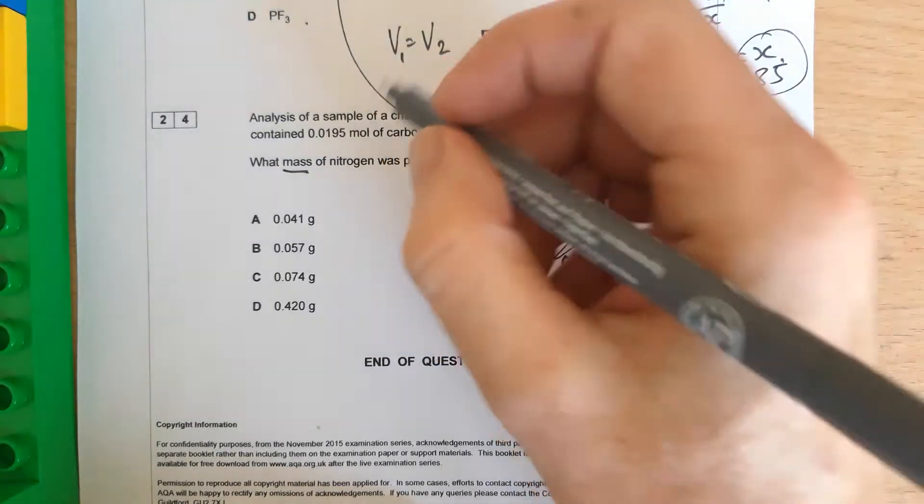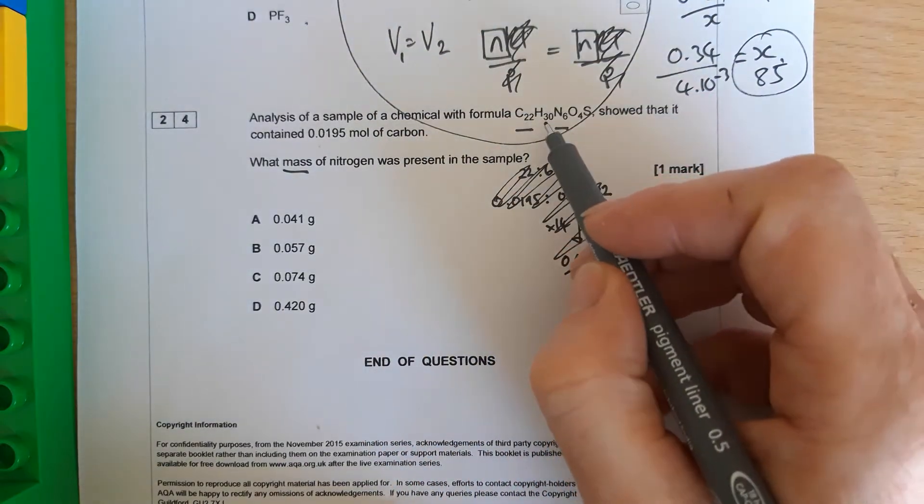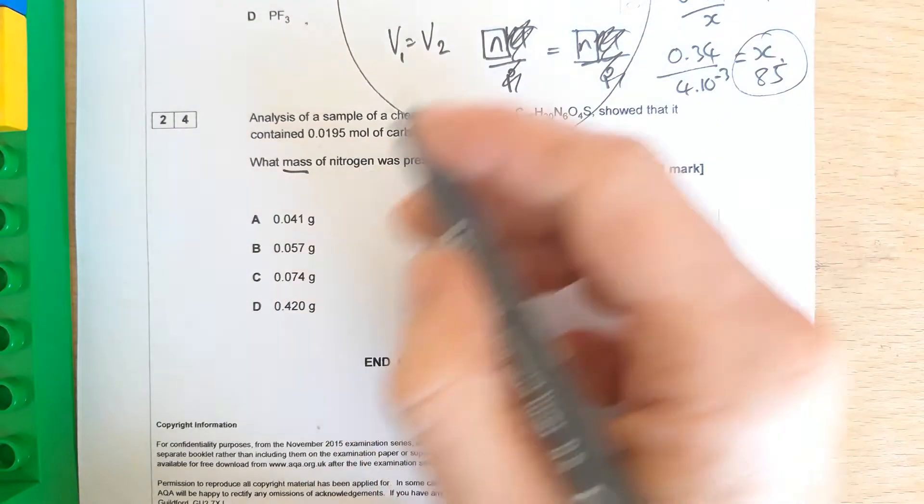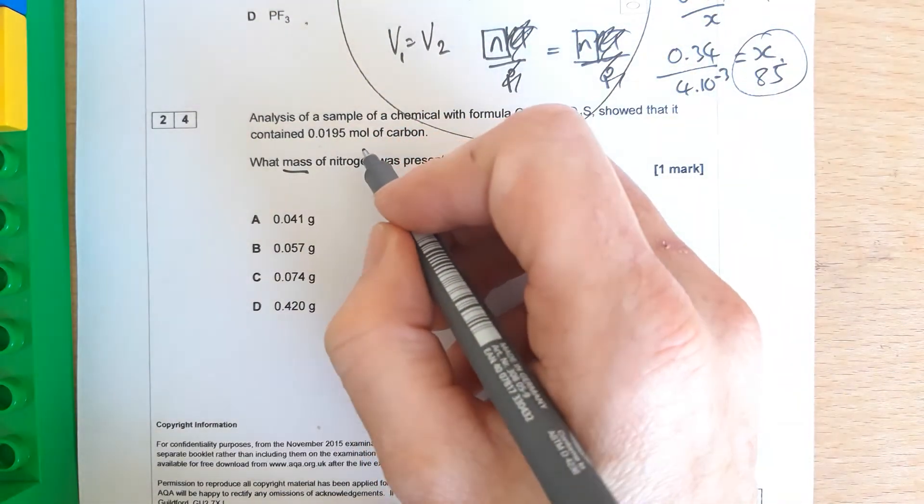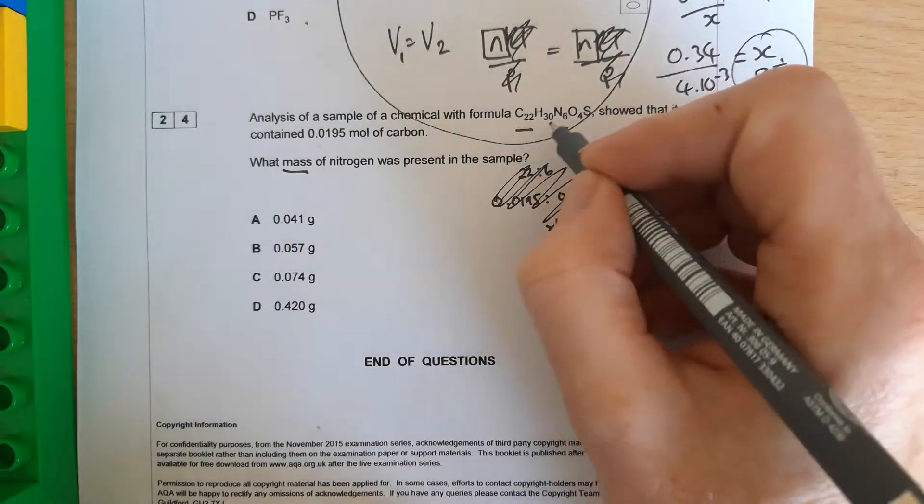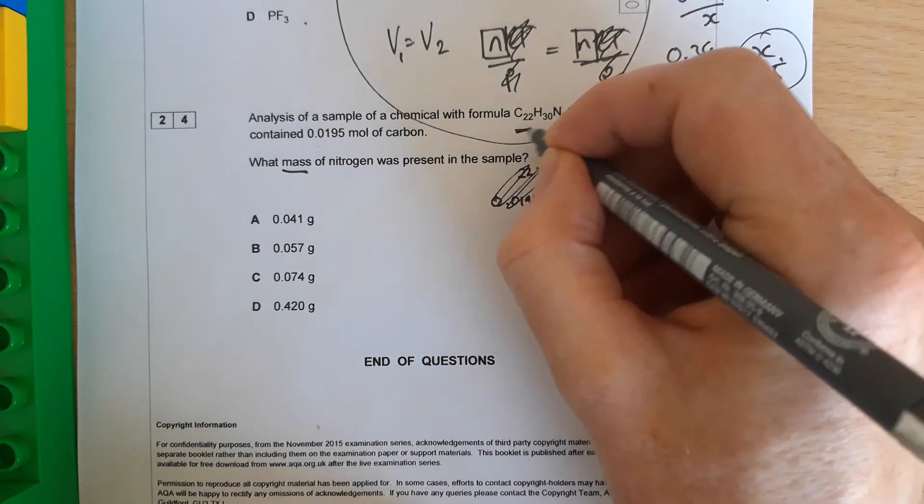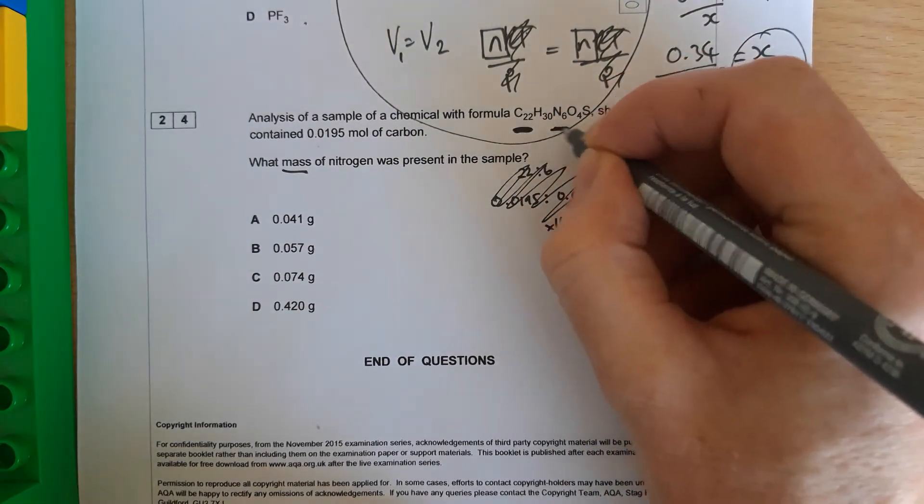Right, what this tells me, there's a chemical with this formula, C22H30N6, and it contains 0.0195 moles of carbon. Well, this formula tells me that for every 22 carbons, there are 6 nitrogens.